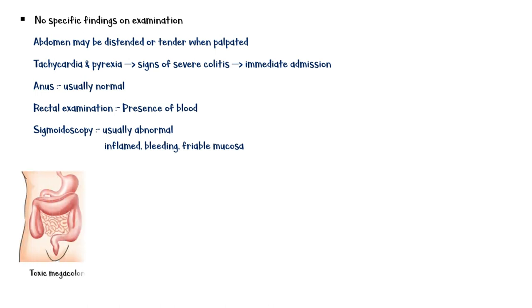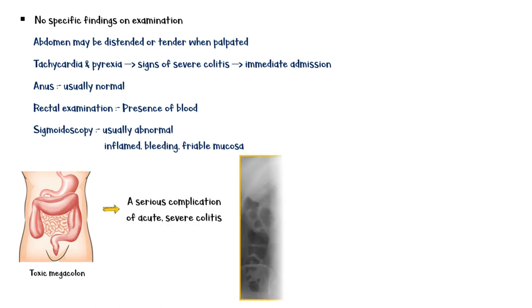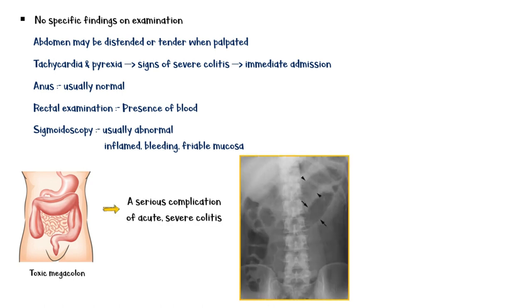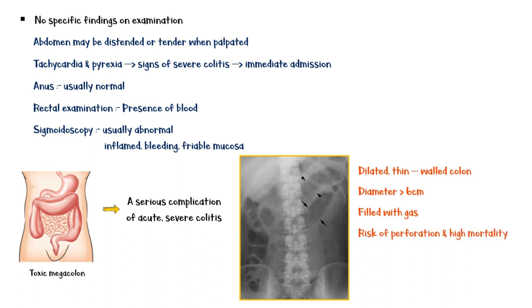Toxic megacolon is a serious complication of acute severe colitis. The plain abdominal X-ray shows a dilated, thin-walled colon with a diameter of more than 6 cm, filled with gas. It is a particularly dangerous stage of advanced disease, with a higher risk of perforation and high mortality.